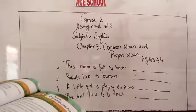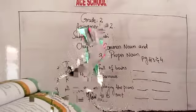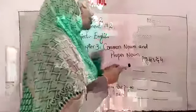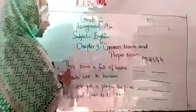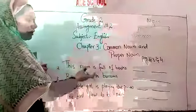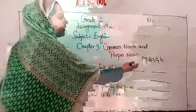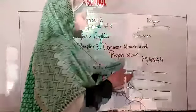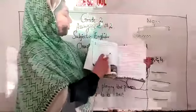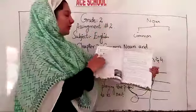You have to make a list of 12 common nouns in your notebook — HP 2 notebook. Here are the common nouns you have to do: underline them and write them down. This is Exercise B, this one.